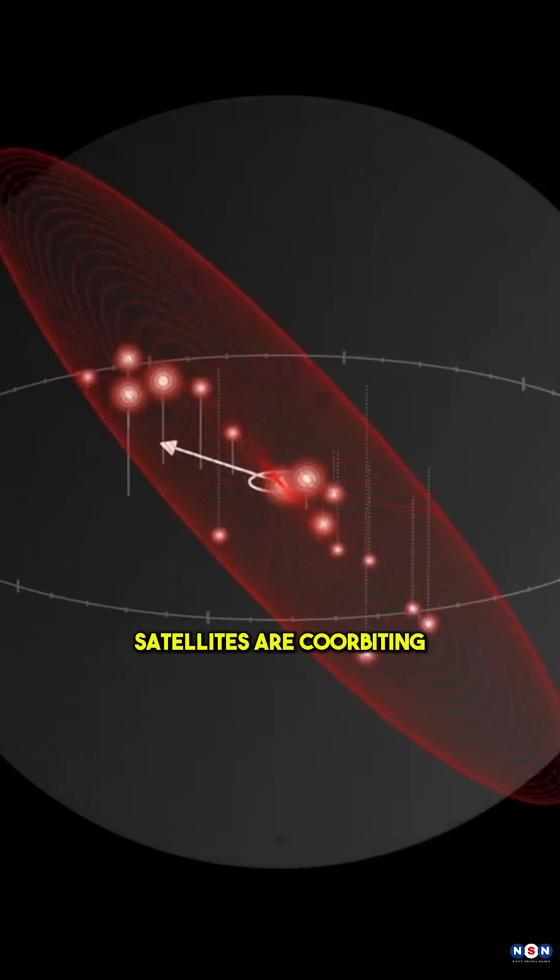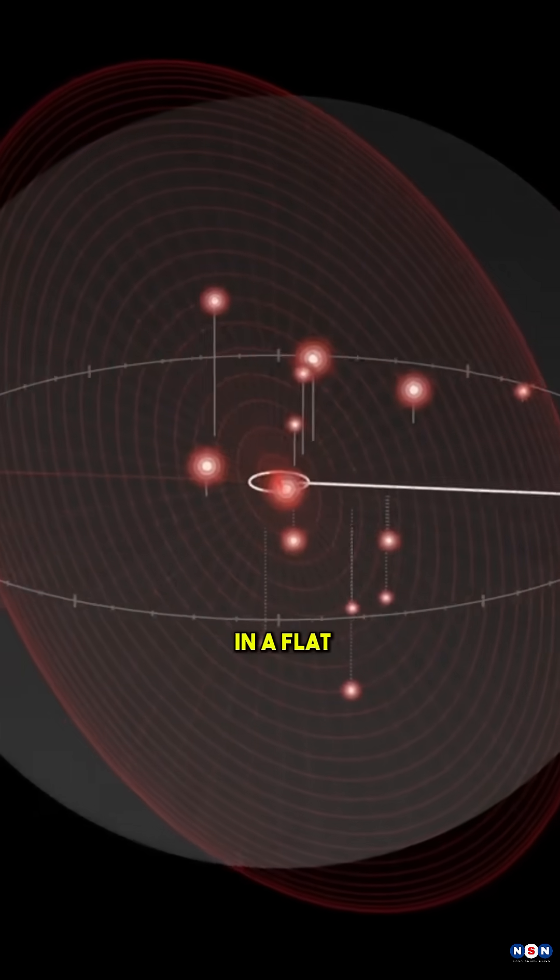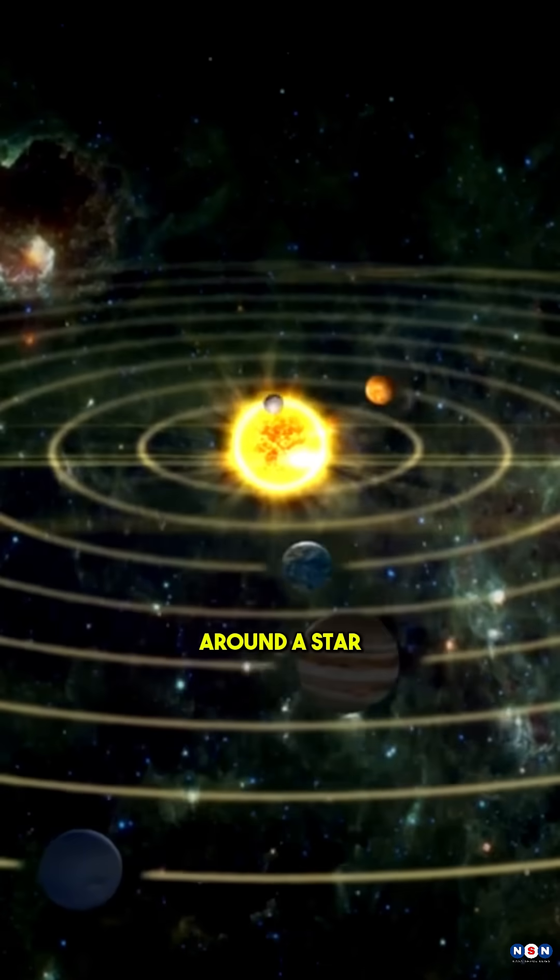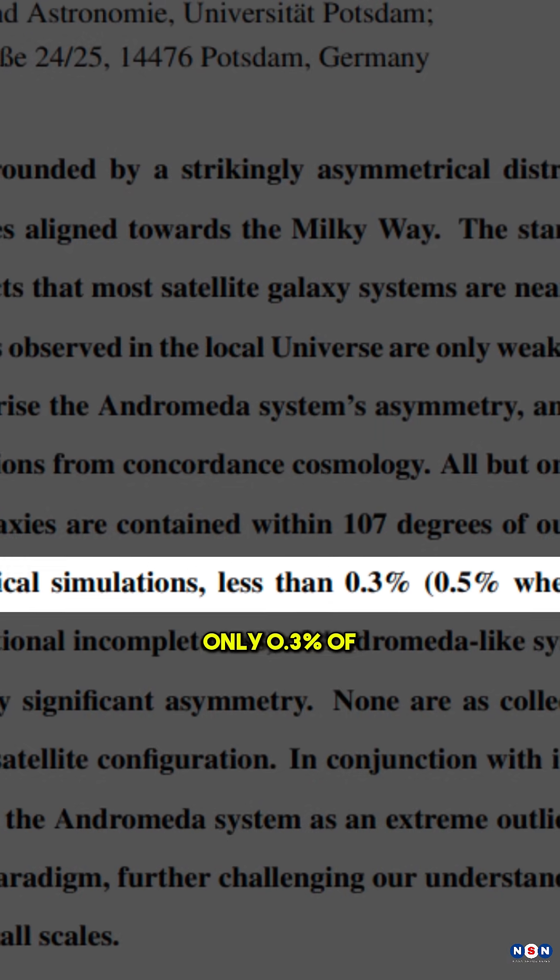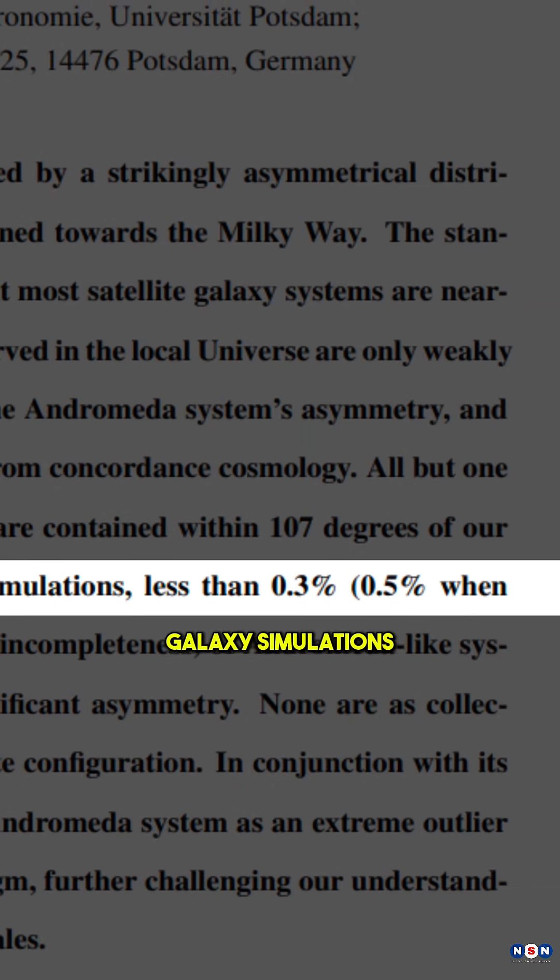Even stranger, about half of these satellites are co-orbiting in a flat, thin plane, like planets around a star. This combination is so rare that it shows up in only 0.3% of galaxy simulations.